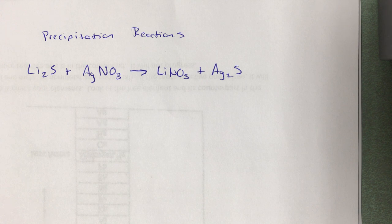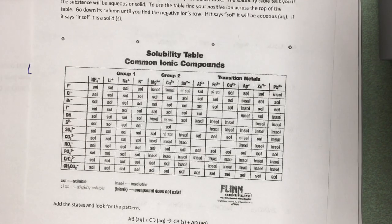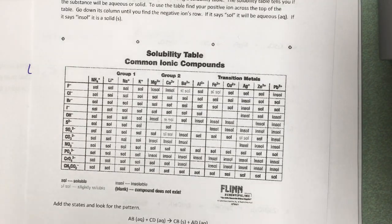Once you're done, you go back and check your double replacement reactions to see if they are precipitation reactions. And to do that, you need to be able to read a solubility table.